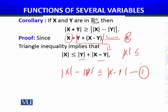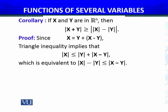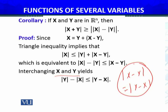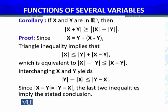I will replace equation number 1, now replacing x and y. So I will have y in place of x and x in place of y, obtaining another inequality. Then I conclude: interchanging x and y, I have this one. Now I know the magnitude of x minus y, or y minus x — it is the same thing. These two things are equal, so I can write x minus y. From these two inequalities, since ‖x minus y‖ equals ‖y minus x‖, the last two inequalities imply the stated conclusion.